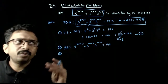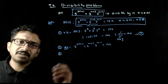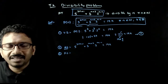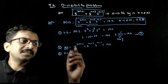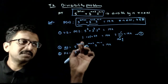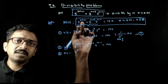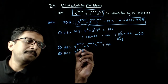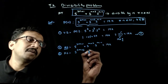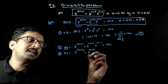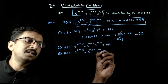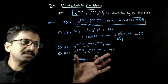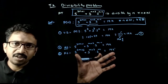Now you have to prove that P(m+1) is true. That is, substituting m+1 in place of n, you get 5^(2m+3) + 3^(m+3) · 2^m is also equal to 19k' for some integer k'. This is what is to be proved.